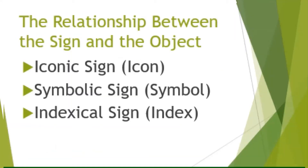Peirce conceptualized three aspects or elements of the sign: the first one, the sign itself; the second one, the sign in relation to its objects; and the third one, the sign in relation to its interpretant. However, in this video, we are only going to focus on the relationship between the sign and the object.